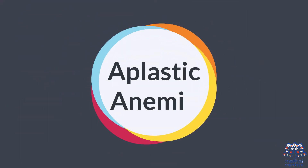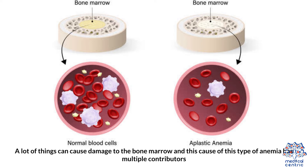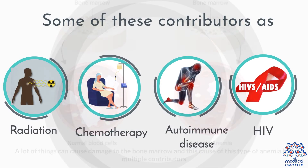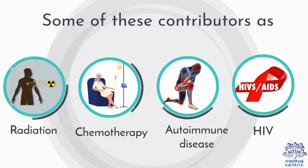Type 7: Aplastic Anemia. This is a type of anemia where your bone marrow doesn't produce enough red blood cells. A lot of things can cause damage to the bone marrow, and this type of anemia has multiple contributors. Some of these contributors are radiation, chemotherapy, autoimmune disease, and certain viruses like HIV.